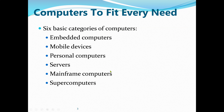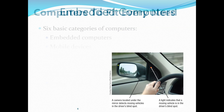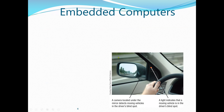In our previous lectures, we defined what a computer is — any electronic device that can take an input, process the input, and be able to store the data or present the data — output the data. So all six categories can do that.